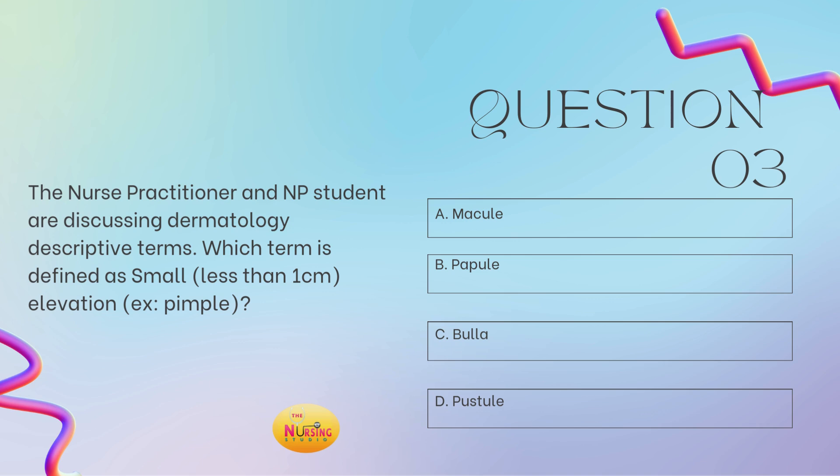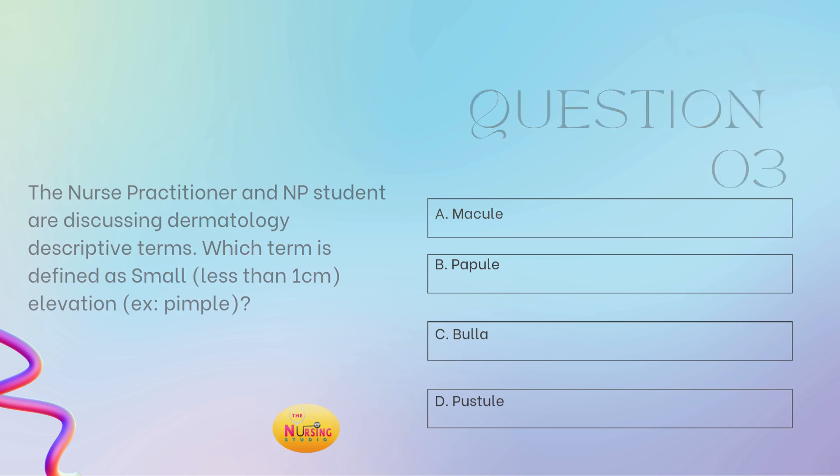Papules are small, less than one centimeter, and elevated. A pustule would also be elevated, but it would be fluid-filled with pus. So this is how you'll be able to differentiate one versus the other.